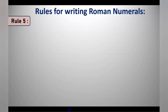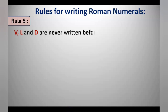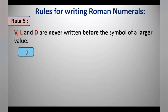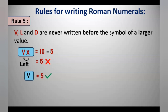Rule 5: V, L, and D are never written before a symbol of larger value — meaning they are never subtracted from any number. For example, writing V before X would give 10 minus 5, which is 5 — but that is wrong, because we already have the symbol V for 5.